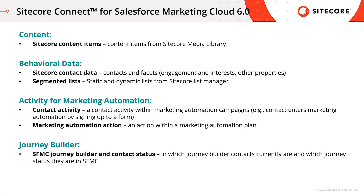Secondly, Segmented Lists — static and dynamic lists from Sitecore List Manager. Activity for Marketing Automation refers to contact activity within the marketing automation campaign in Sitecore Experience Platform, such as a contact that enters a marketing automation plan by signing up to a form on our website. A marketing automation action refers to an action within such a marketing automation plan. And finally, the Journey Builder from Salesforce Marketing Cloud — contact status refers to which journey builder plan a contact is currently on and in which status they are.